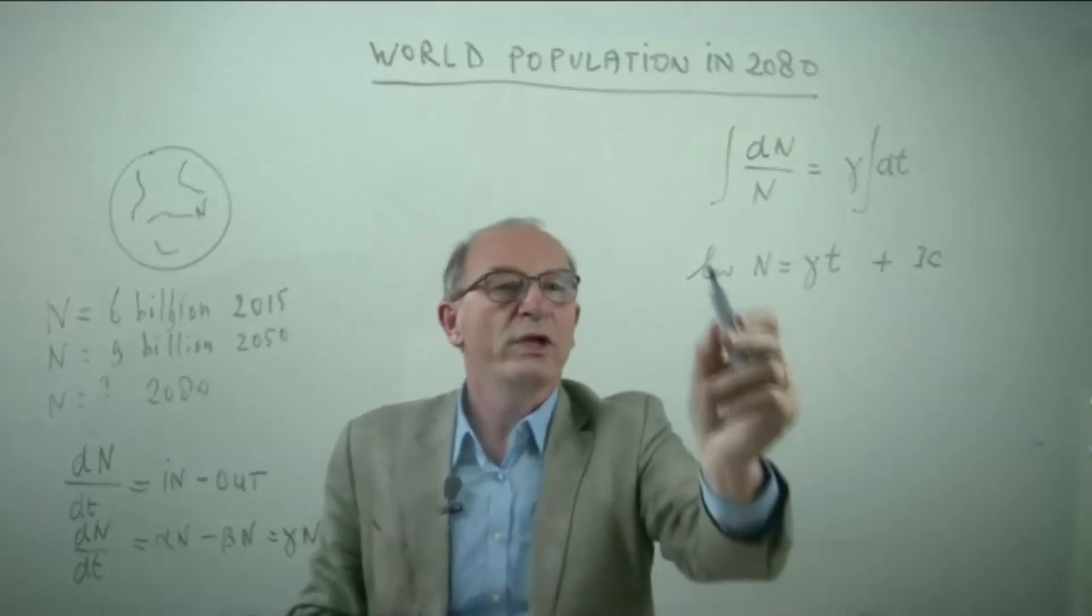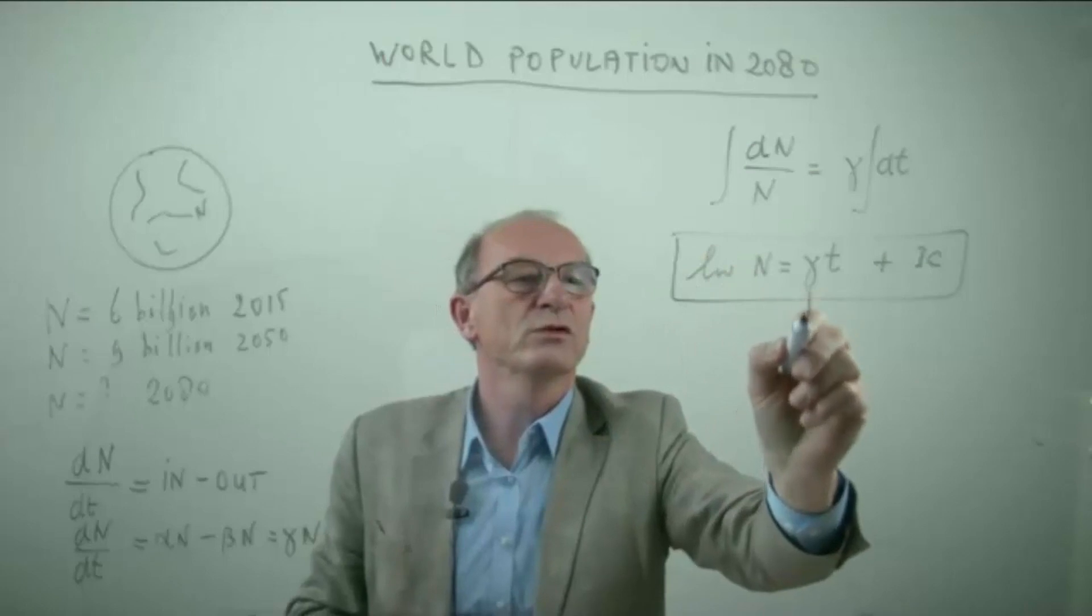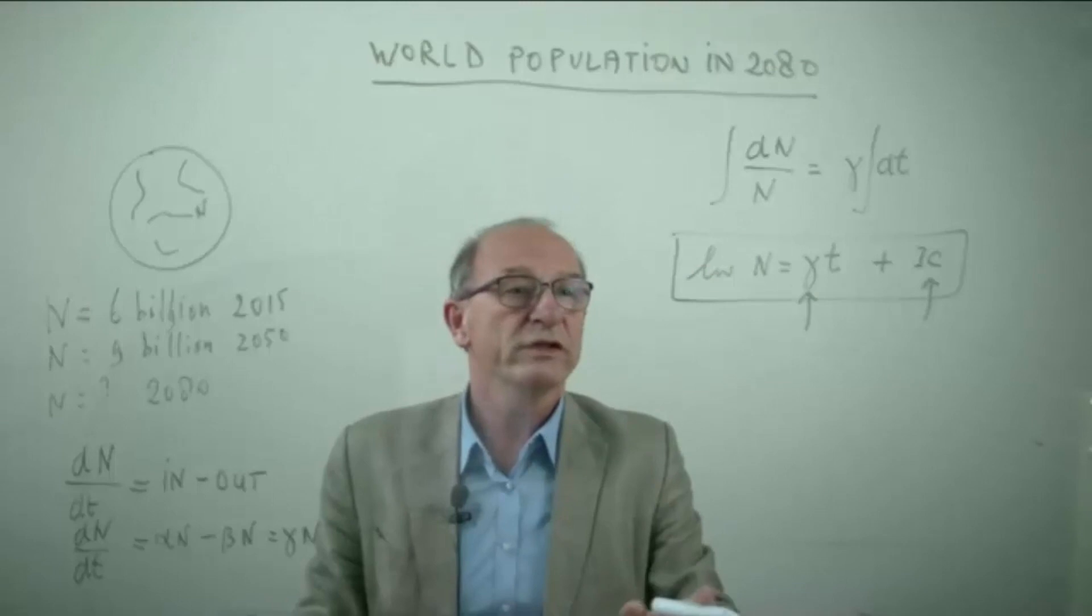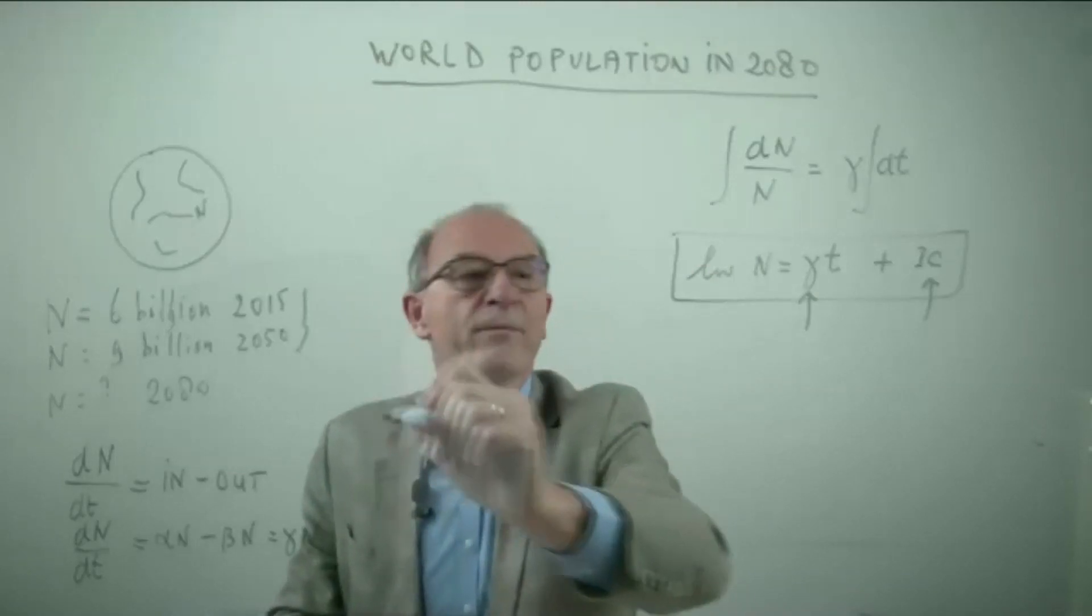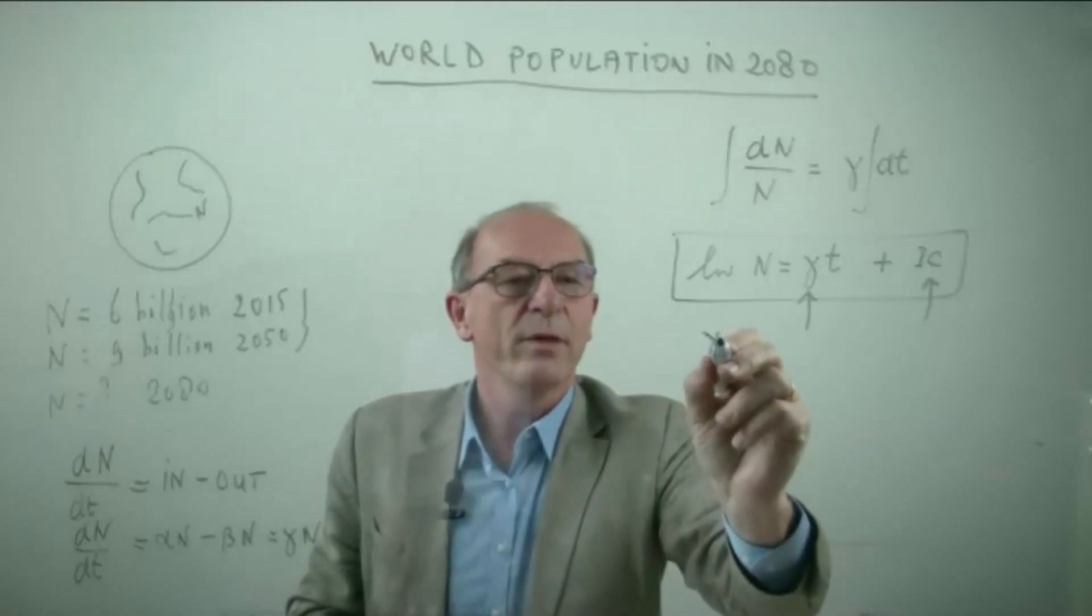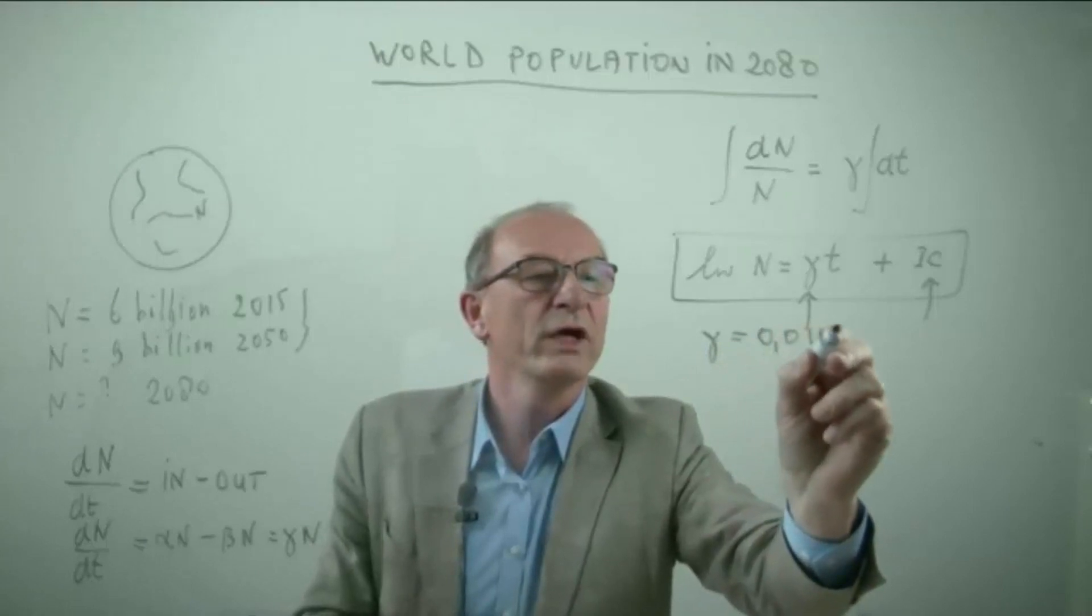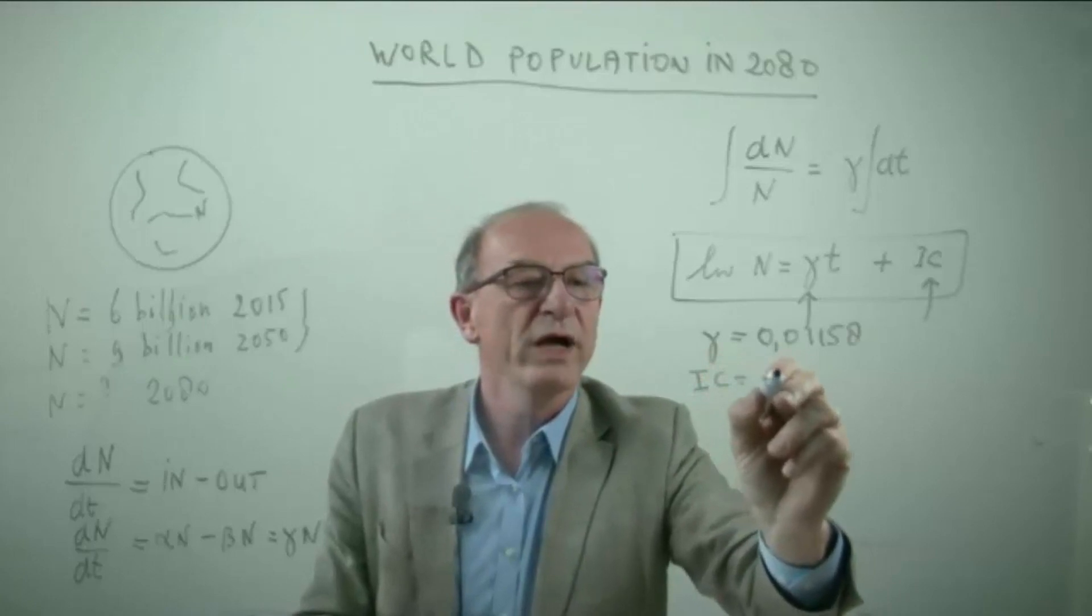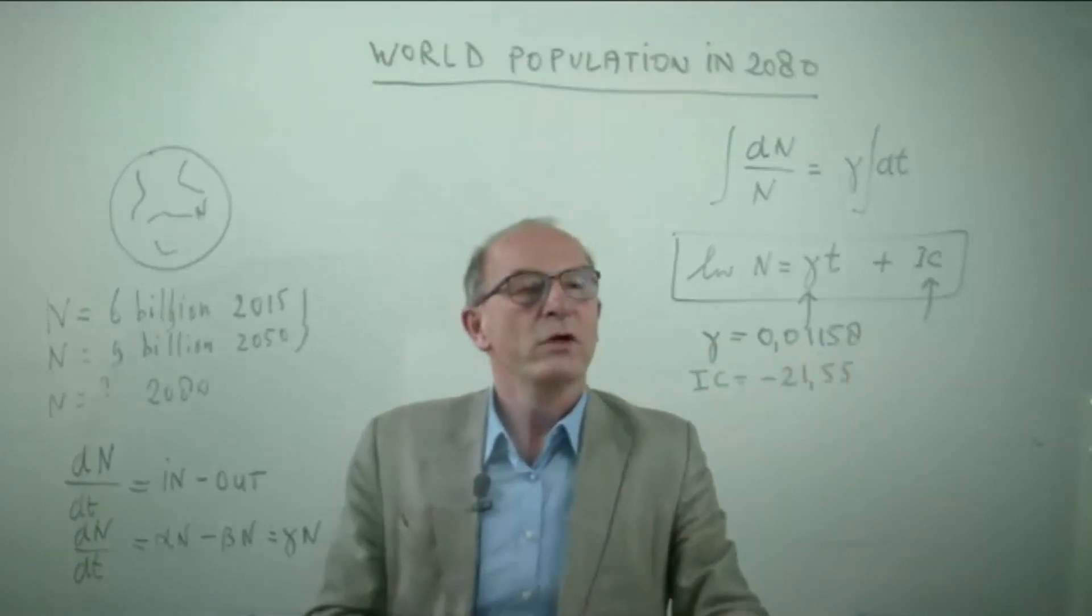We have now an equation with two unknown variables, because we don't know gamma and we don't know the initial conditions. But on the other side, we have also two boundary conditions here. If you fill these boundary conditions in, you will see that gamma becomes 1.158 and the integration constant will be minus 21.55. I have rounded a little bit.